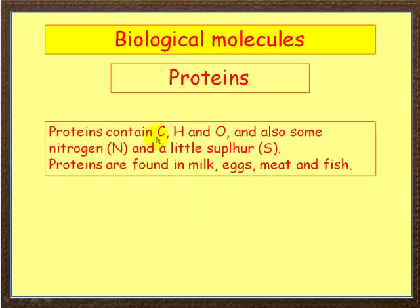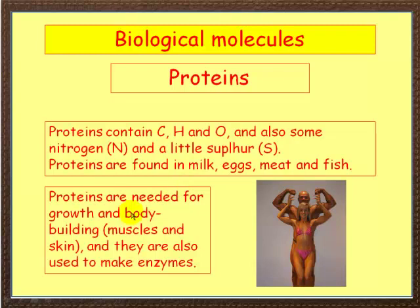Next we've got proteins. Proteins contain carbon, hydrogen, and oxygen, and also nitrogen - because they're made up of amino acids and it's the nitrogen that makes the amino acids. And in a couple of amino acids there is sulfur. Proteins are found in milk, eggs, meat, and fish. What are they for? Well, proteins are needed for growth and bodybuilding - that means muscles and skin - and they're also used to make enzymes to help break down other chemicals.